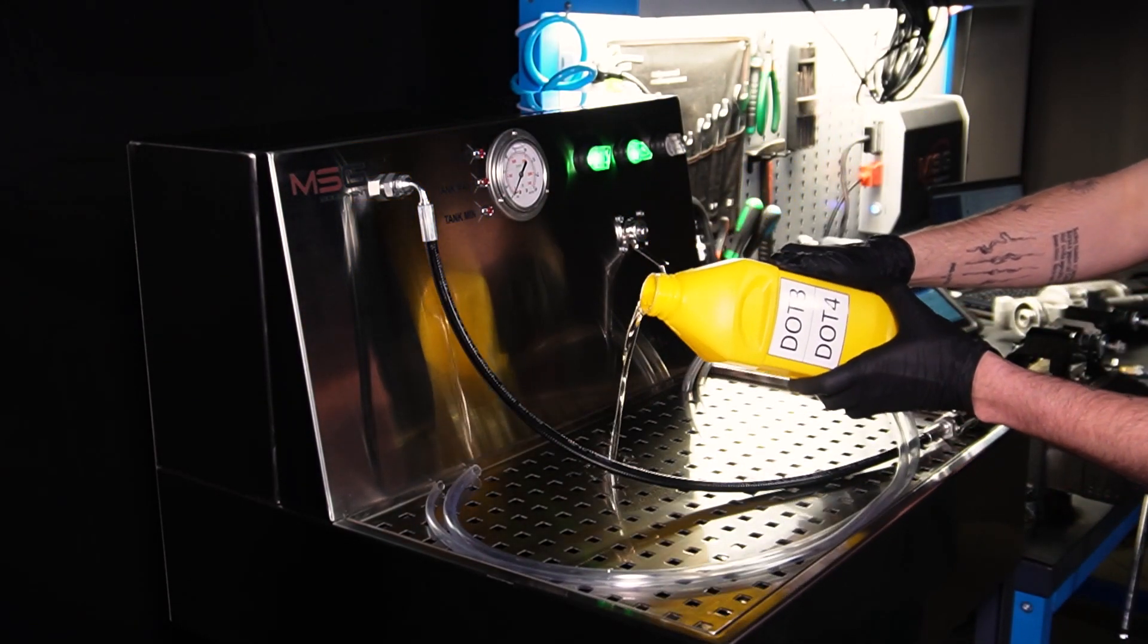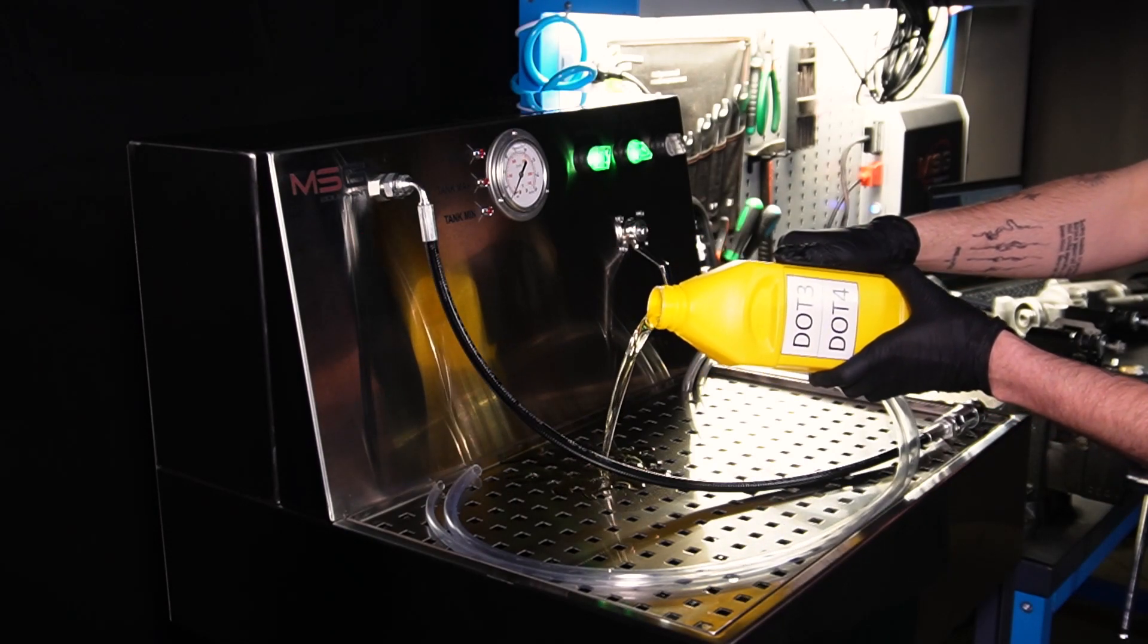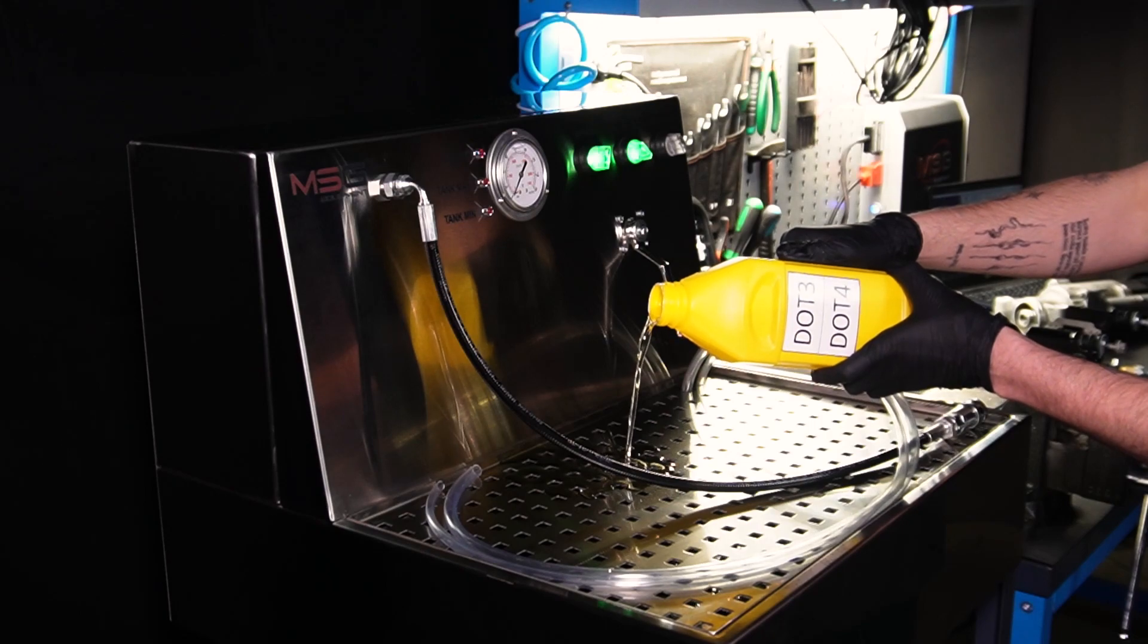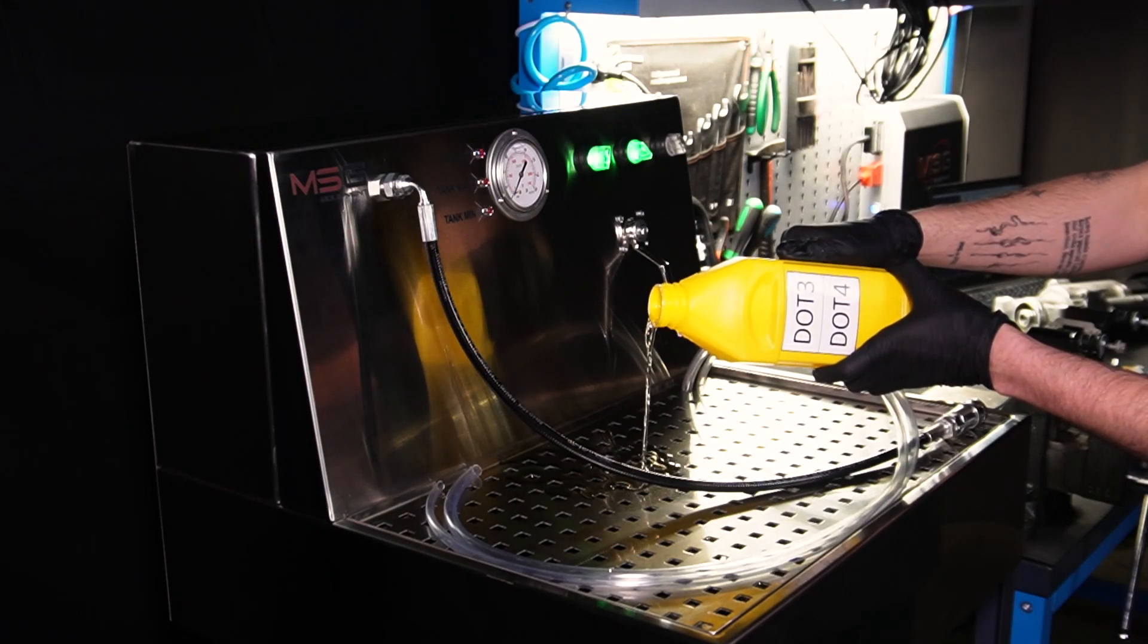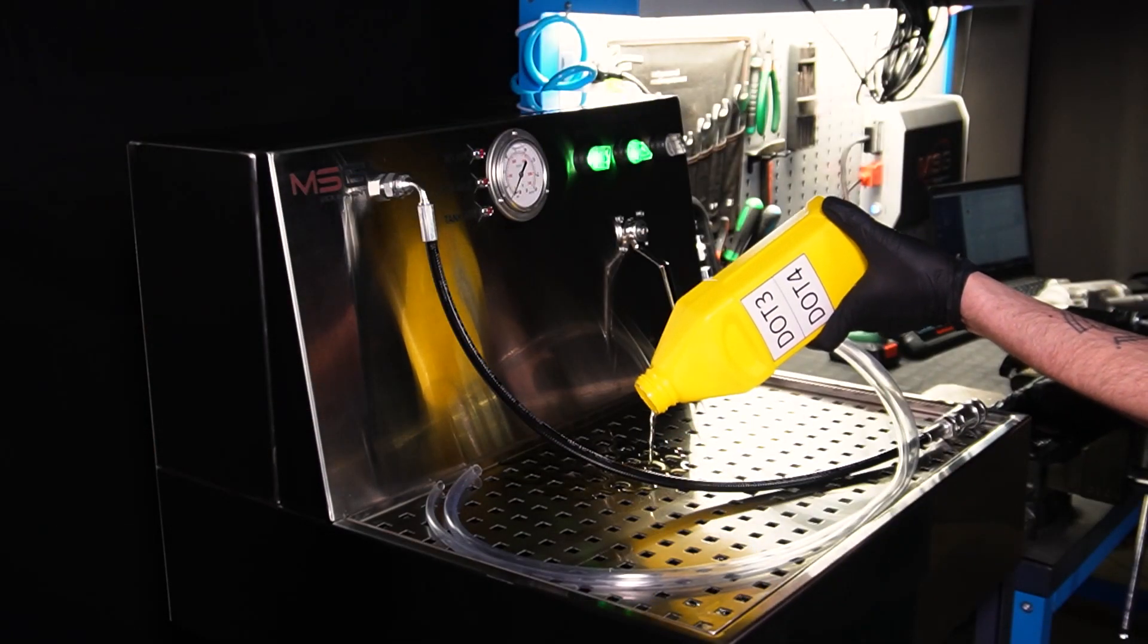Pour brake fluid into the drain tray and switch on the drain mode. The bench will pump out fluid until the tank is full, after which it will automatically finish pumping out fluid and the tank max indicator will illuminate.